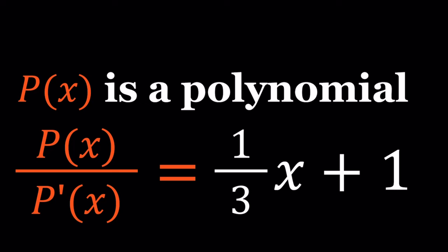We're going to find polynomials that satisfy this equation. With polynomials, one of the most important things is the degree. Can P of X be a constant polynomial? Can it be linear? Can it be quadratic? Obviously P cannot be a constant because the derivative of a constant is 0, and we can't have 0 in the denominator. So we're going to start with the linear case.